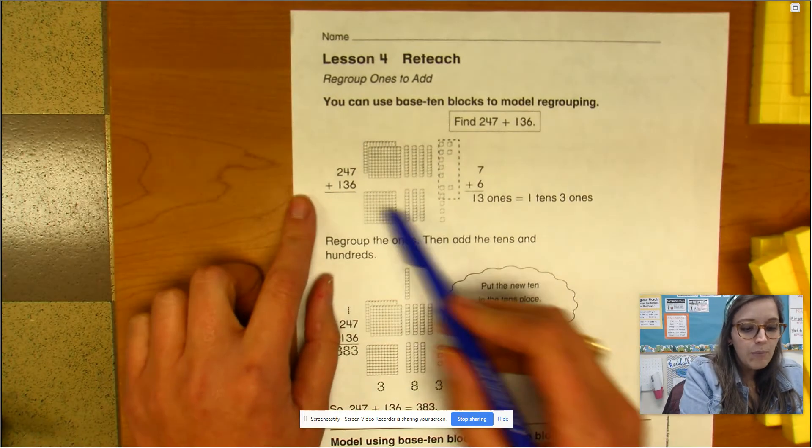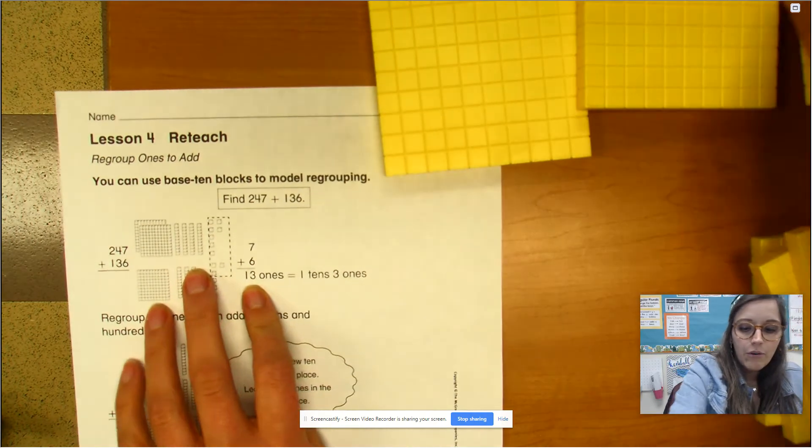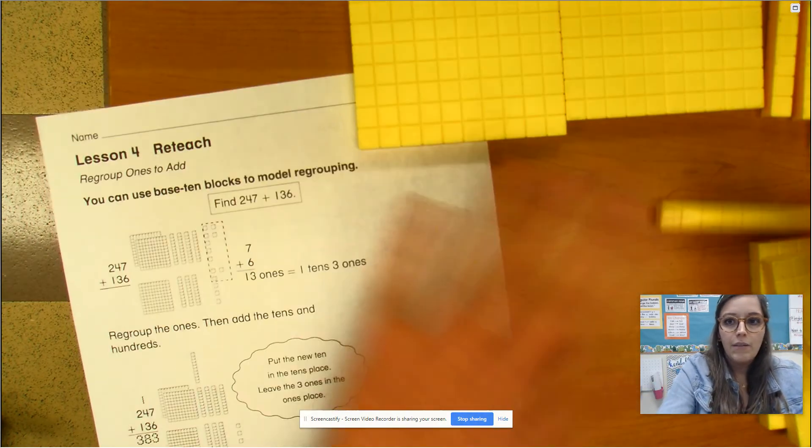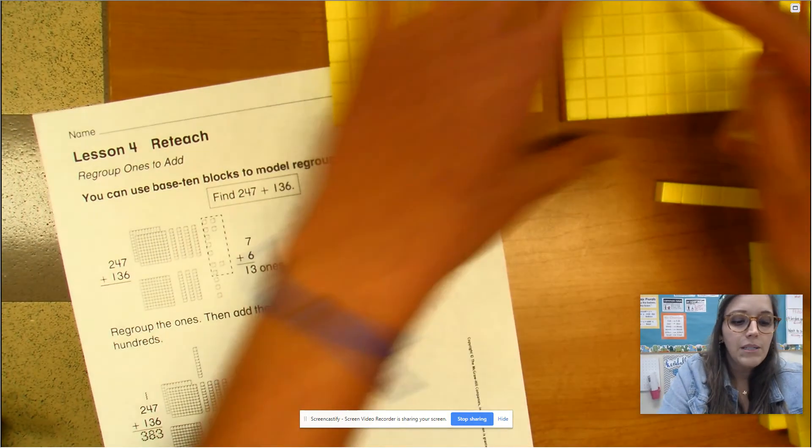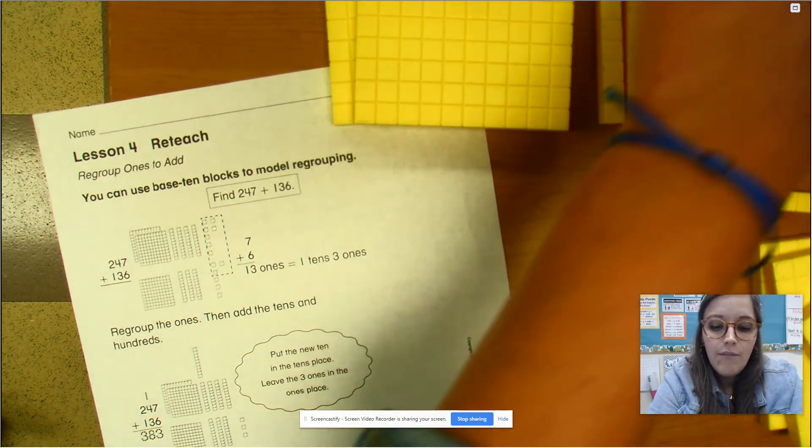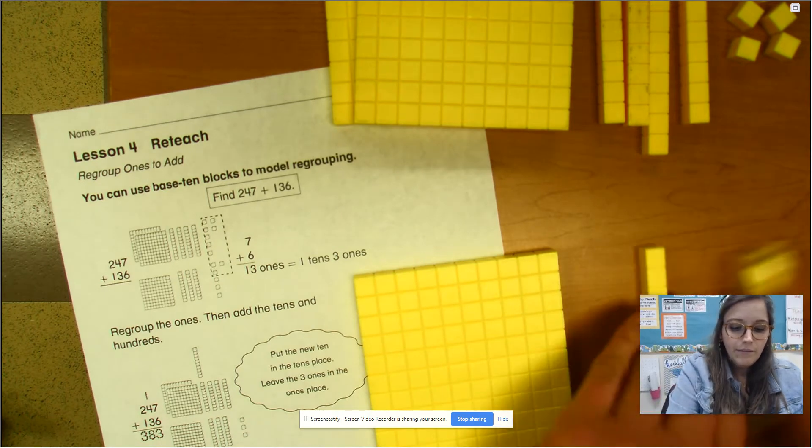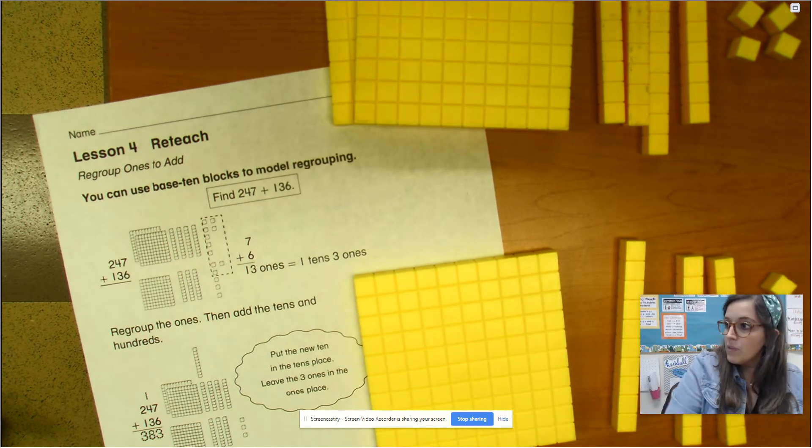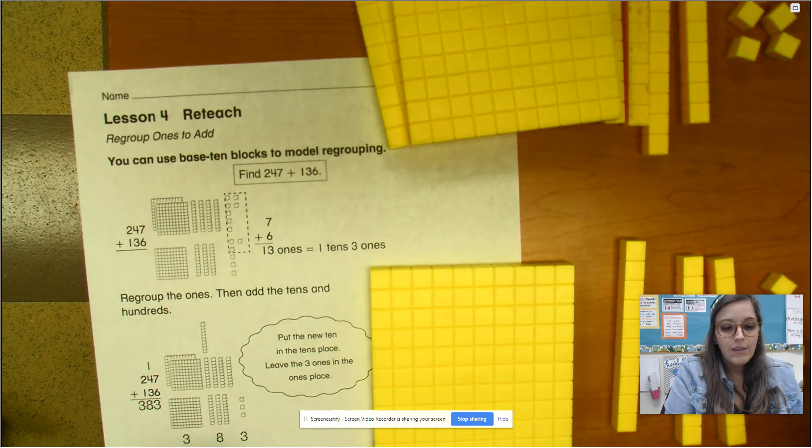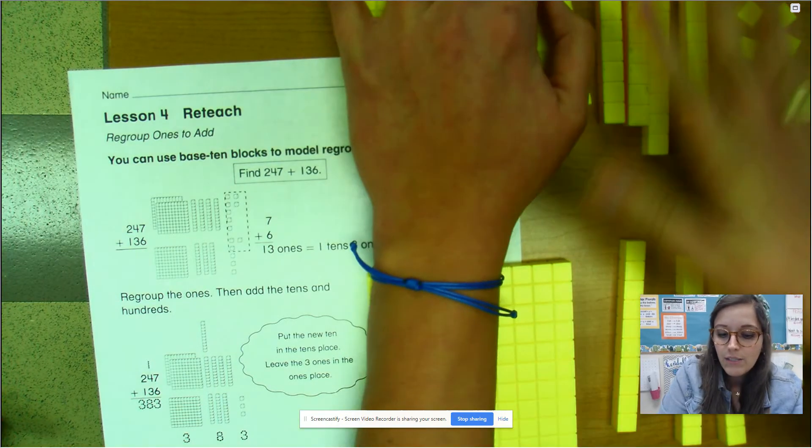Our first problem is 247 plus 136. So I have that here. I have 247. I'm going to stack these. 240, 1, 2, 3, 4, 5, 6, 7 plus 136. So we're going to treat this as though these hundreds are invisible. They are invisible. All we're dealing with is these guys right here.